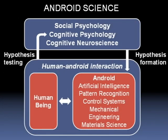This diagram tries to illustrate what android science is all about. In social psychology, cognitive psychology, and cognitive neuroscience, there are a lot of hypotheses about human behavior. And we can implement these hypotheses in an android,